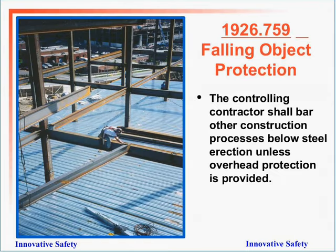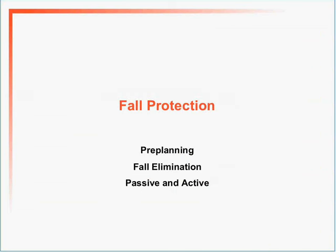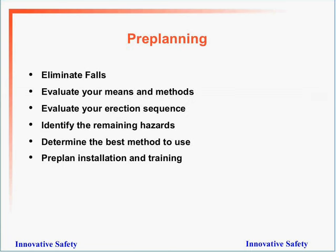Falling object protection: the controlling contractor shall bar other construction processes below steel erection unless overhead protection is provided — that is the controlling contractor's responsibility. Fall protection: the first step in pre-planning for fall protection is to eliminate the fall. After determining whether the fall can be eliminated, there are two kinds of fall protection — passive and active. Passive fall protection includes safety nets, platforms, and guardrails — anything a person can use to protect from a fall without having to do anything particularly himself.